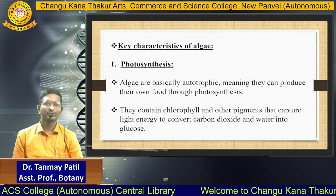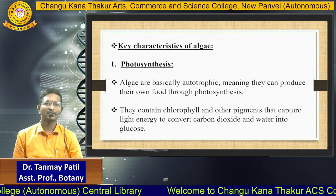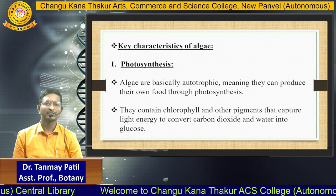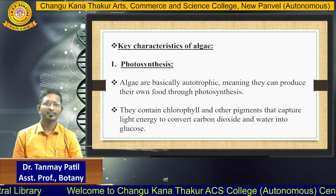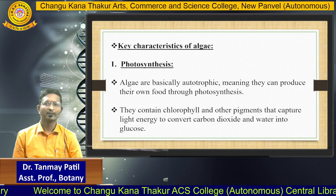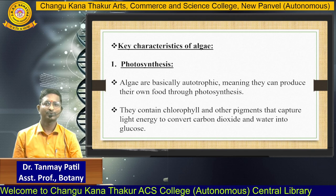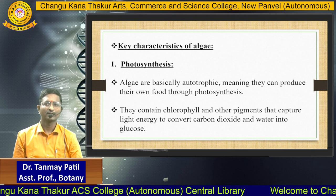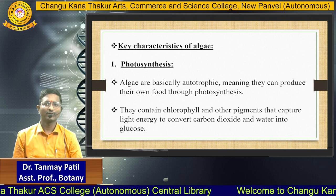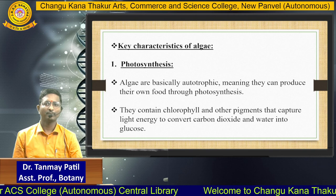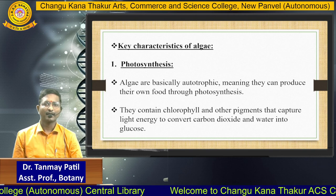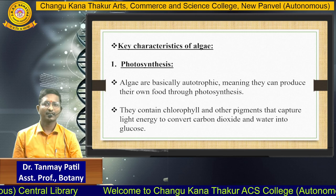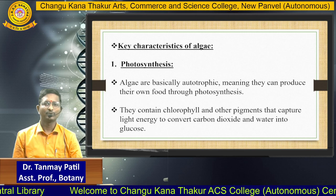Now we have to see some key characteristics of algae. The first one is photosynthetic. Algae are basically autotrophic, meaning they can produce their own food through photosynthesis. They contain chlorophyll and other pigments that capture light energy to convert carbon dioxide and water into glucose.